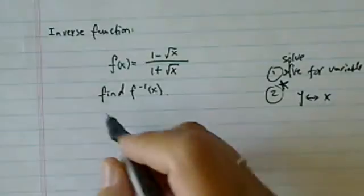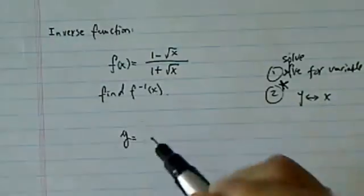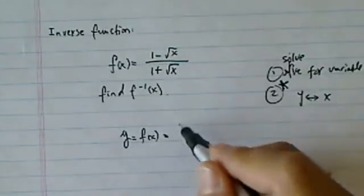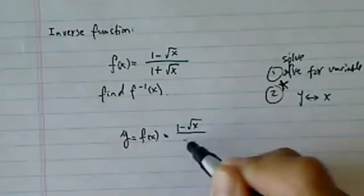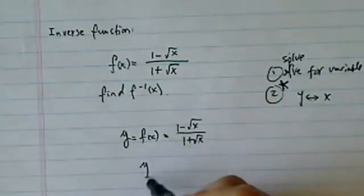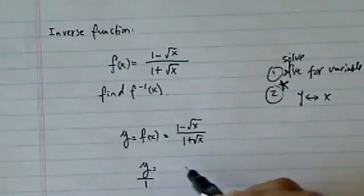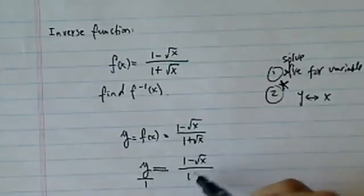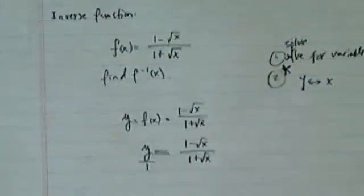So let's use y as our f(x) - it's easier to write than f of x. So what I really have is y over 1 equals 1 minus √x over 1 plus √x.